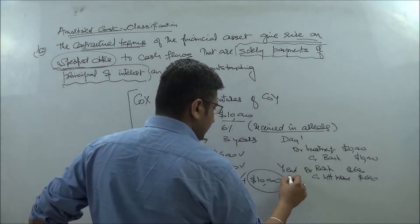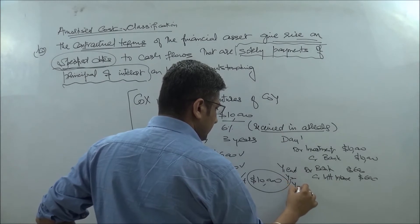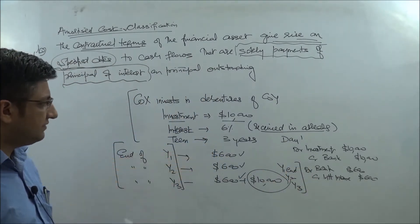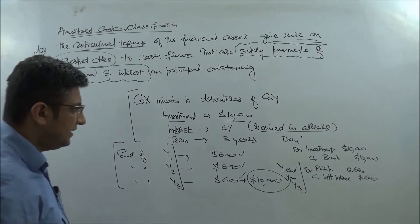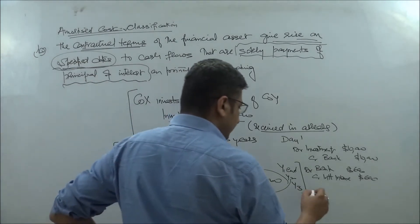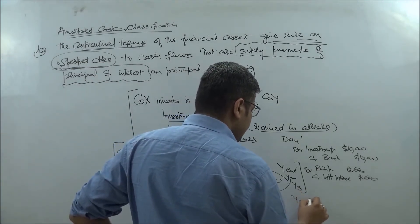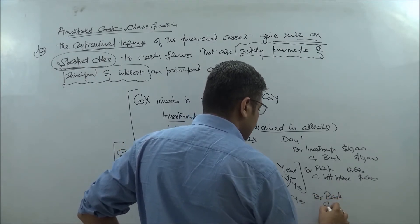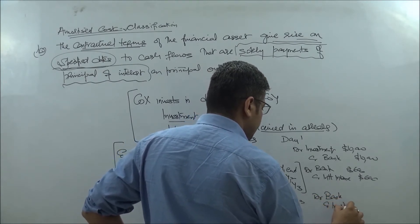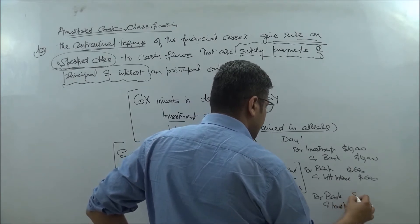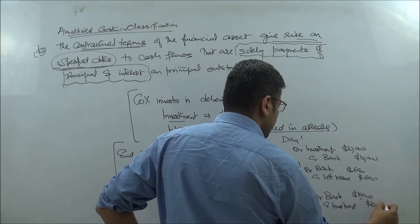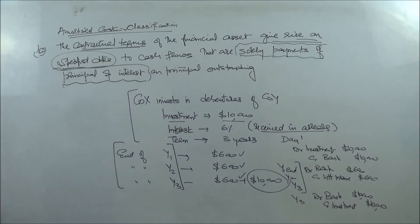This same entry applies not just for year one but also year two and year three — each year you receive $600. At the end of year three, the recovery of principal is also recorded: debit Bank, credit Investment, $10,000. Quite straightforward and logical.